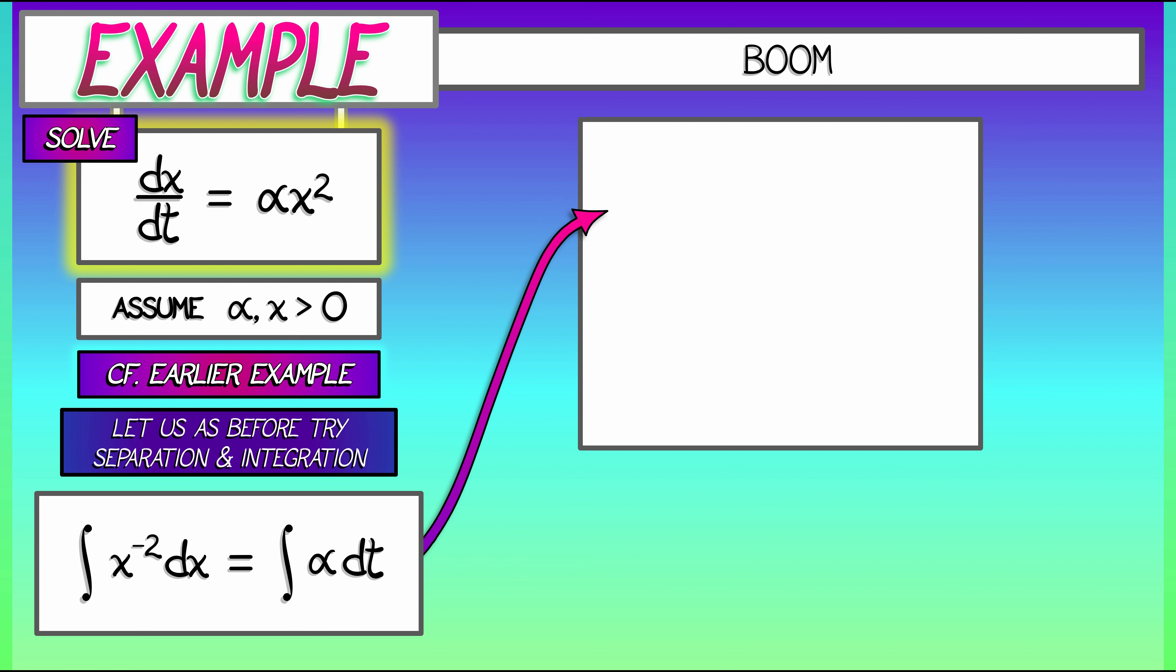On the left, the integral of x to the negative 2 is minus x to the negative 1. On the right, we have alpha times t plus a constant. Don't want to forget that. What is that constant? If we put in t equals 0 and consider the initial condition at x0, then we can easily see that that constant c is negative 1 over x0.